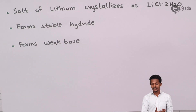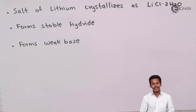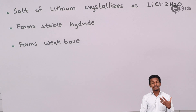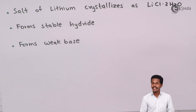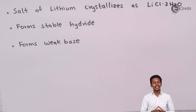Another difference is that the chlorine salt of lithium, LiCl, crystallizes as LiCl·2H₂O, forming a stable hydrate, while the hydrates of sodium and other group 1 metals are unstable. Also, LiOH is a weak base, whereas NaOH and KOH are very strong bases. Additionally, the chloride and fluoride salts of lithium are sparingly soluble in water, while the corresponding sodium and potassium salts are highly soluble.